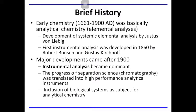Just a brief history of analytical chemistry. There are two major historical points in its development. First, early chemistry from 1661 to 1900 AD, which is more about elemental analysis. And second, the further development of instrumental analysis that came after 1900. Take note that in the 1600s, scientists all over the world were still more interested in filling up the periodic table and discovering more elements. The big names — Eustace Leiby, Robert Bunsen, and Gustav Kirchhoff — were instrumental in this era, especially in the development of the first instrumental analysis.